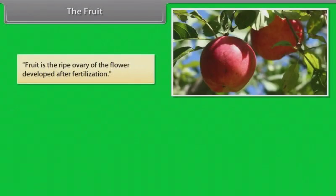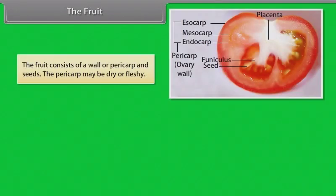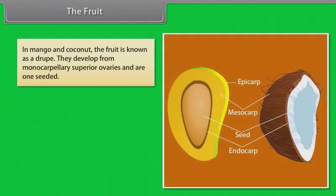Fruit is the ripe ovary of the flower developed after fertilization. If a fruit is formed without fertilization of the ovary, it is called a parthenocarpic fruit. The fruit consists of a wall, a pericarp, and seeds. The pericarp may be dry or fleshy. When the pericarp is thick and fleshy, it is differentiated into the outer epicarp, the middle mesocarp, and the inner endocarp.